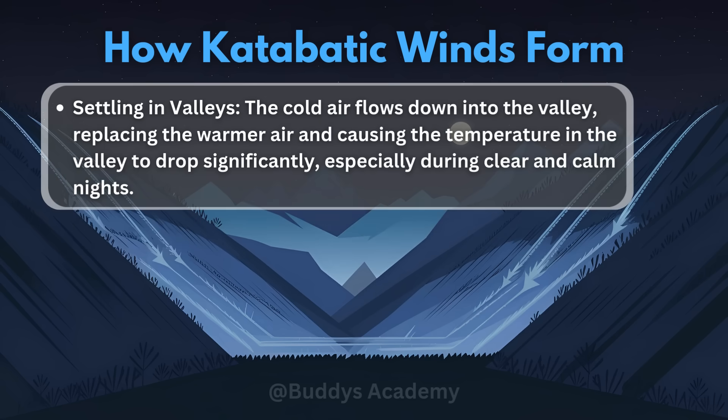The third point states settling in valleys. The air flows down into the valley, replacing the warmer air and causing the temperature in the valley to drop significantly, especially during clear and calm nights. Once the cold air reaches the bottom of the valley, it will push any warm air within the valley upwards, making the valley very cold.